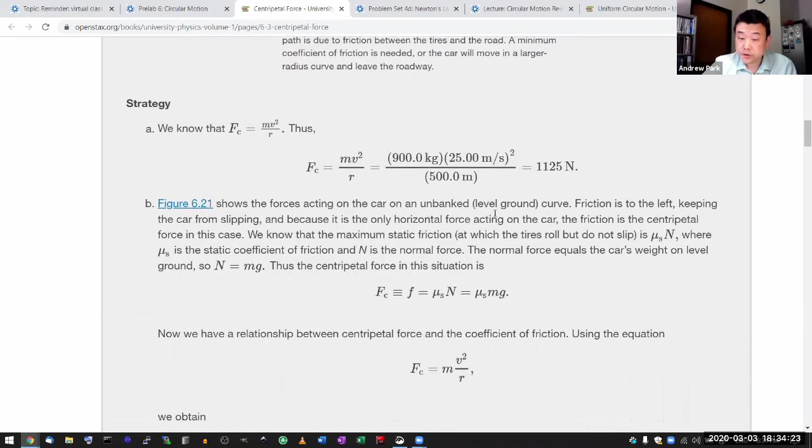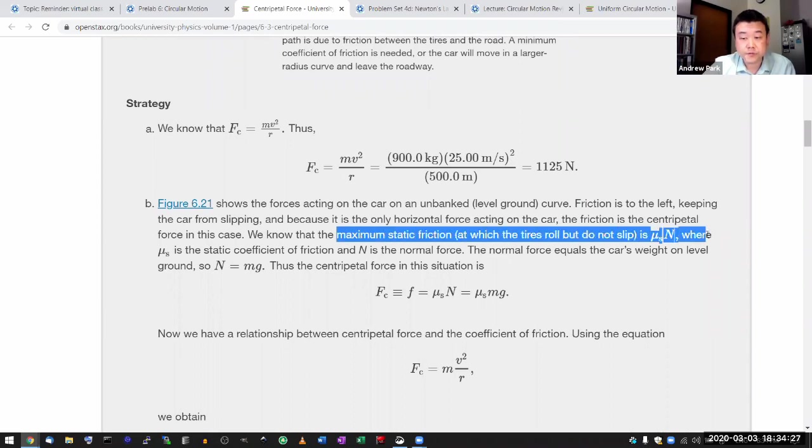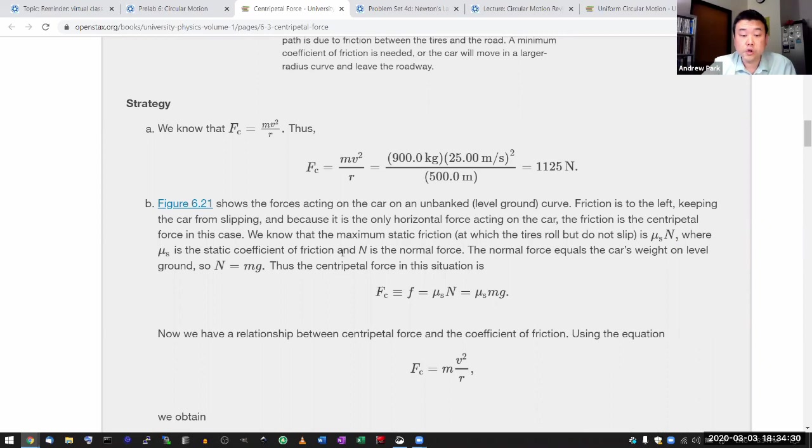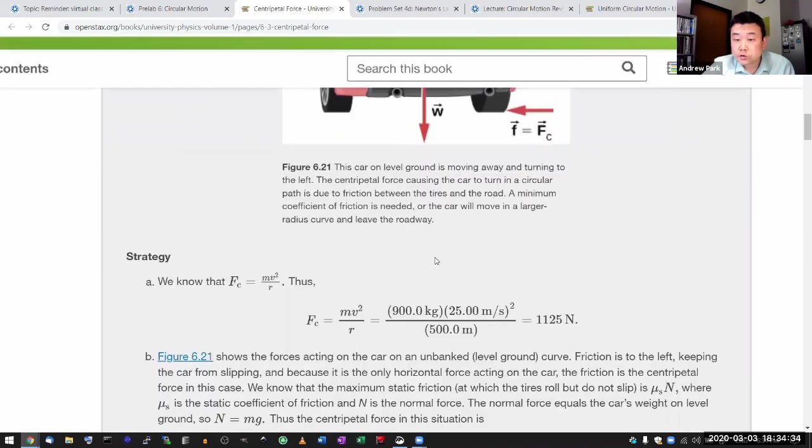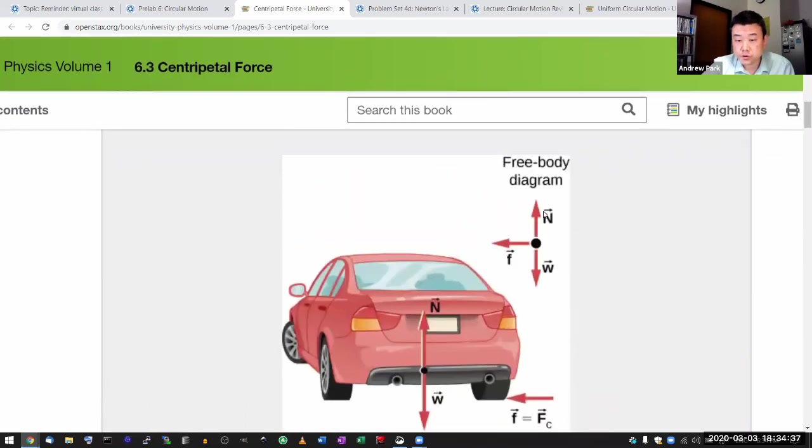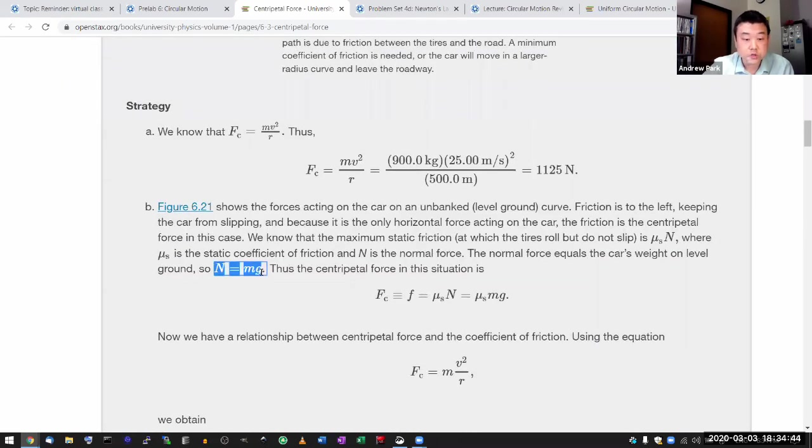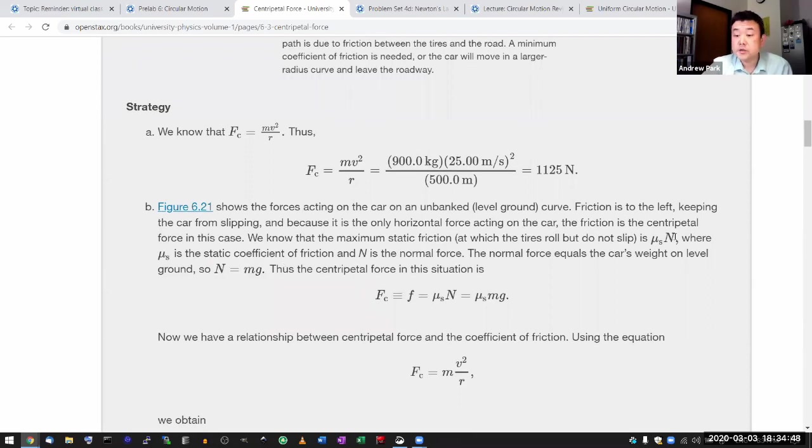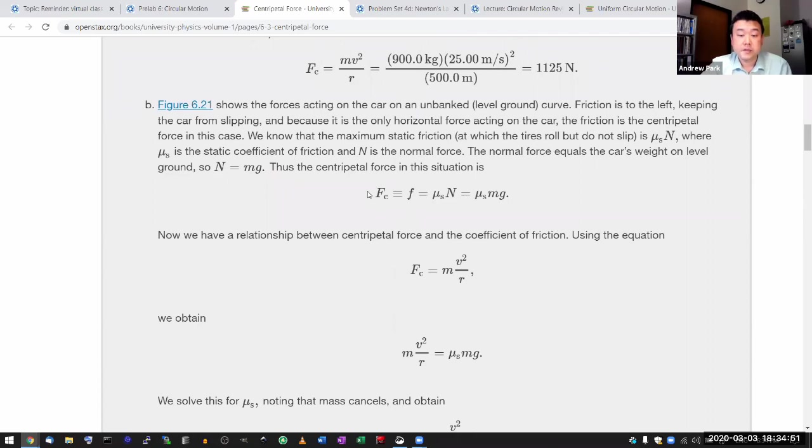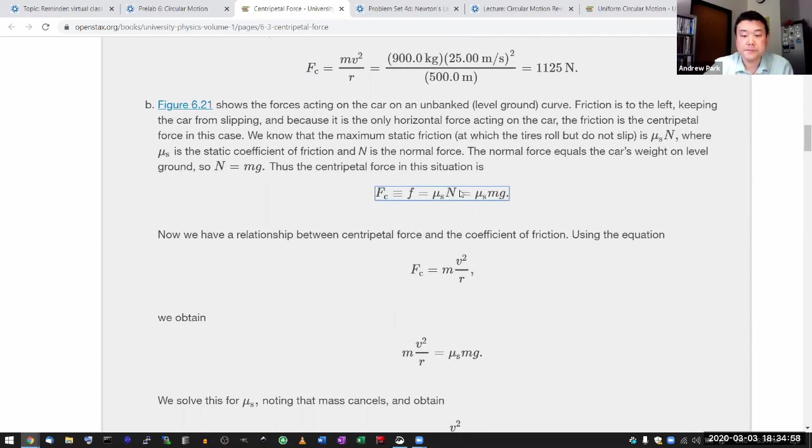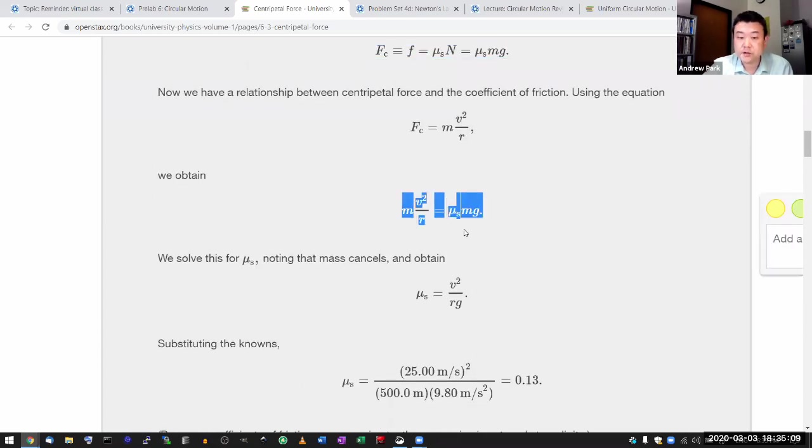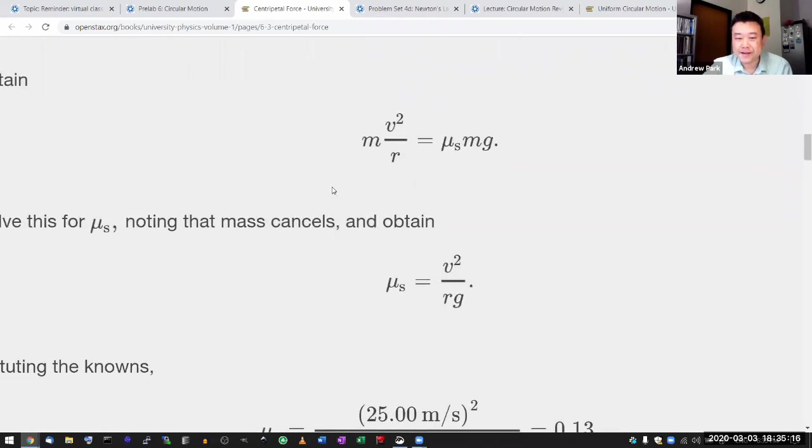From knowing that the maximum static friction force is this, they need the normal force. That's where they look at the free body diagram to draw the connection that normal force should be equal to weight, so normal force equals mg. Putting this together, they get the centripetal force, which is equal to friction force, equal to μs mg. Plugging in centripetal force equals mv squared over r, you end up with this expression where you can cancel out mass.